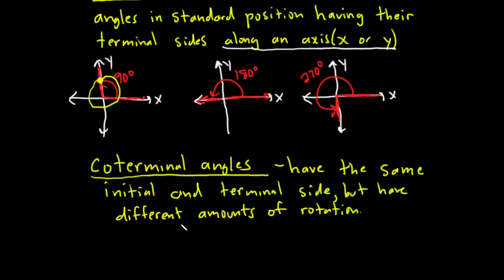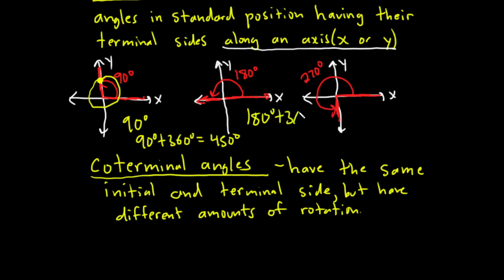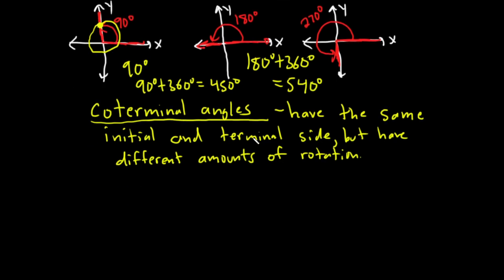Basically you can take any angle and add or subtract 360 any number of times and you're going to get a coterminal angle. As an example, here's 90 degrees. If you wanted to find a coterminal angle, you just add 360 to it. So a coterminal angle would be 90 plus 360, which would be 450 degrees — 450 is coterminal with 90 degrees. Likewise, you can take 180 and add 360 to get 540 degrees as a coterminal angle. You could also subtract 360 or add it multiple times.